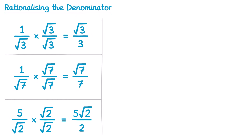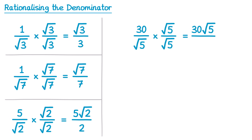Sometimes when you've rationalised the denominator you need to do some further simplifying. Let's try one like that. So this time we have 30 over root 5. We're going to multiply by root 5 over root 5. On the top, 30 times root 5 is 30 root 5, and on the bottom, root 5 times root 5 is 5. Now this one can simplify further. If we look at 30 over 5, that's the same as 30 divided by 5, which is 6. So the answer to this question, fully simplified, would be 6 lots of root 5, or 6 root 5.